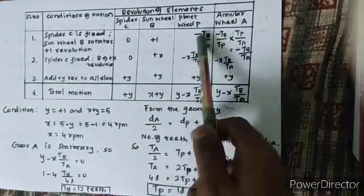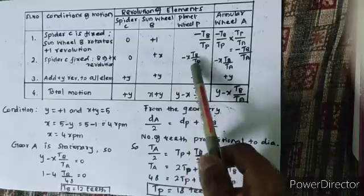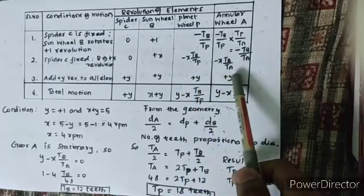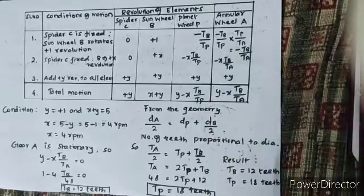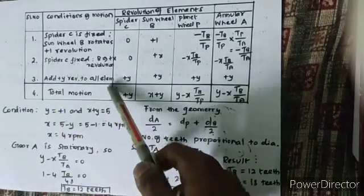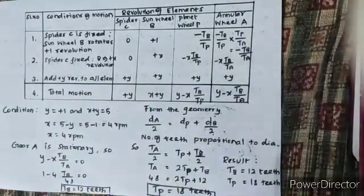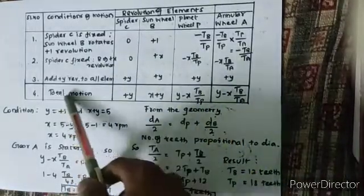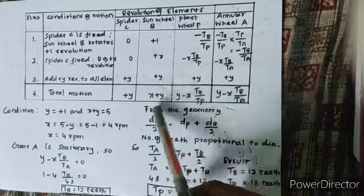0, plus X, so after X multiply: minus X into TB by TP, minus X into TB by TA. Add plus Y revolutions to all elements.